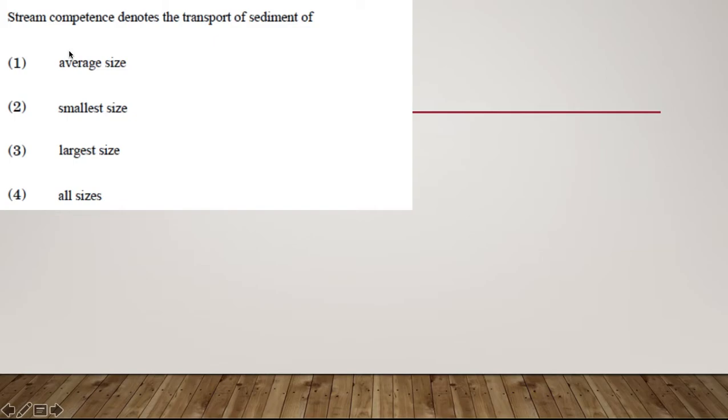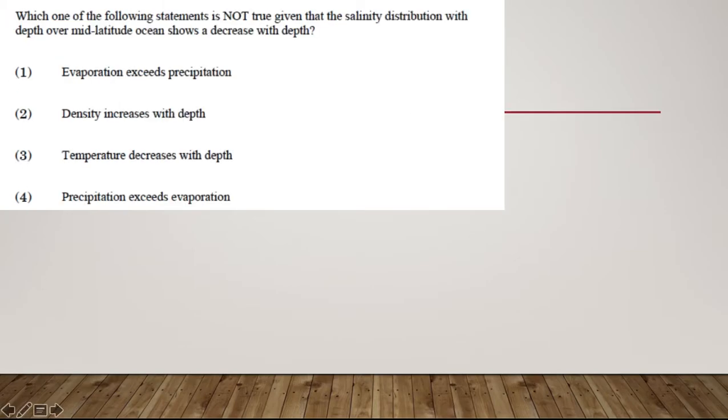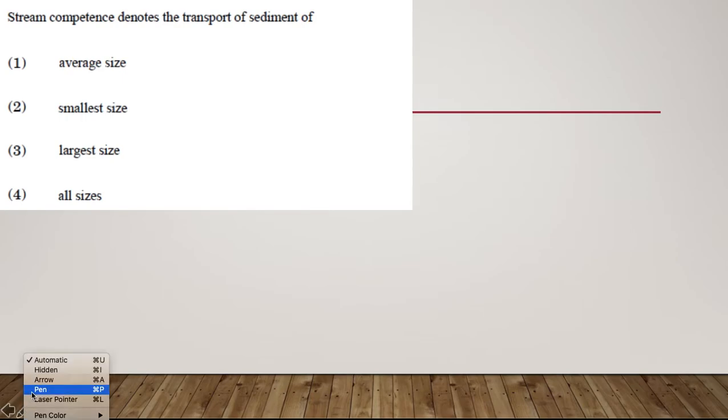Stream competency denotes the transport of sediment. What is competence and what is capacity? Stream competence measures size of the particle. The right answer is largest size. The capacity measures quantity of sediment. The amount of sediment is called capacity, and the largest size of sediment that can be held by a stream is called competence.